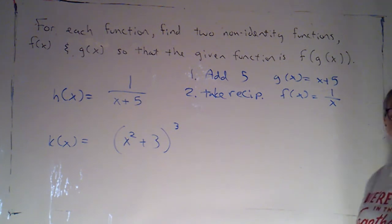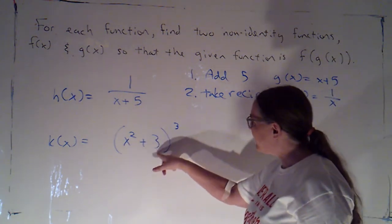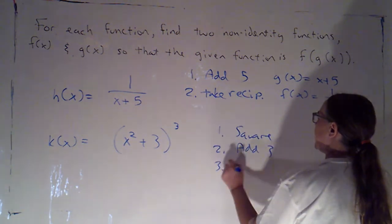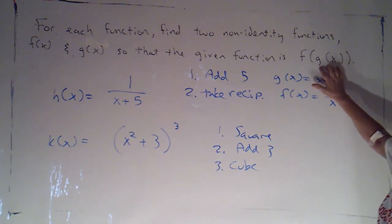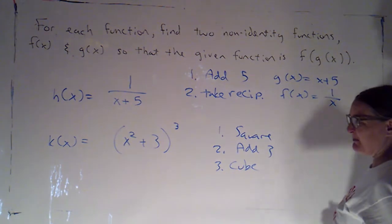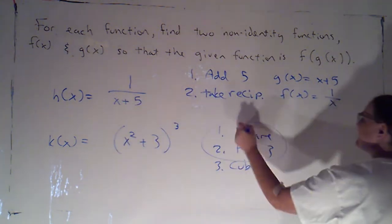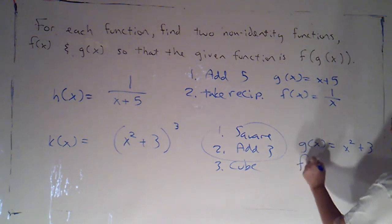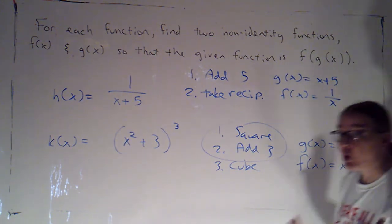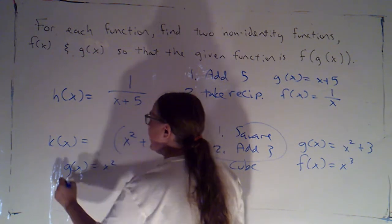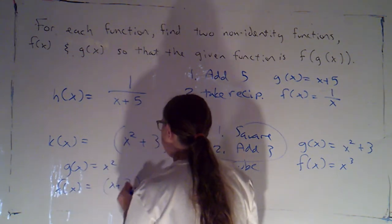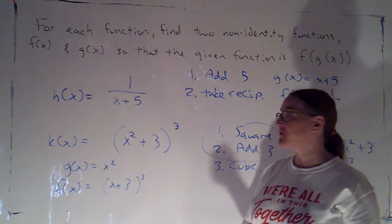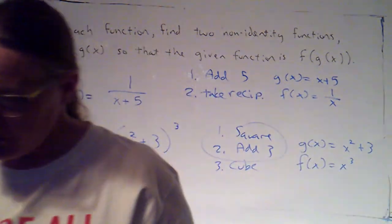With k of x, this is another one where I'm actually doing three things. I'm squaring x, I'm adding 3, and I'm cubing. So, one of f or g is going to have to do more than one thing. I think the simplest thing to do, since I've got the x squared plus 3 in parentheses, is to simply let g of x be that quantity that's inside parentheses that does those first two things, and then I could let f of x be the cubing function. But, another perfectly acceptable option would have been to let g of x be x squared, and then f of x would be x plus 3 cubed. Do make sure that you're adding the 3 before you're cubing, because that was the order in which we were doing things with this function.